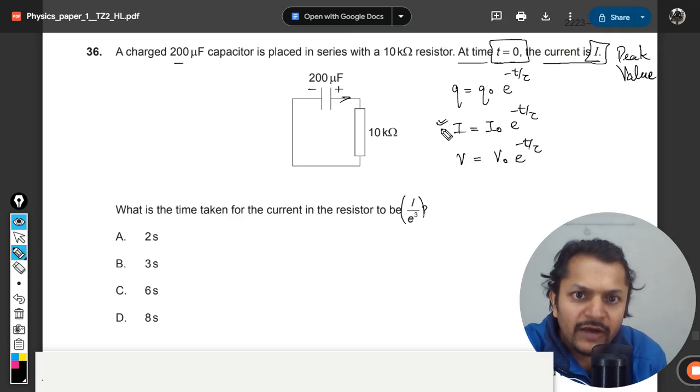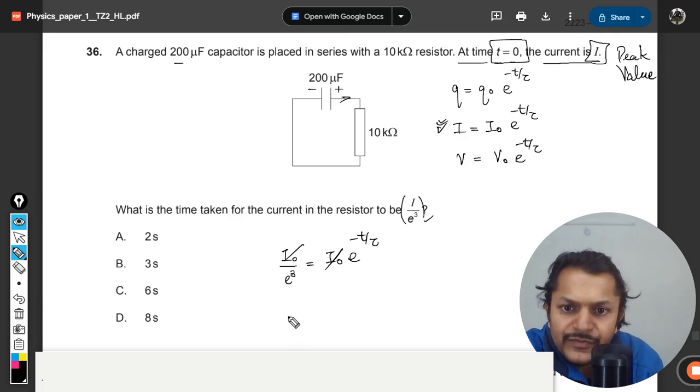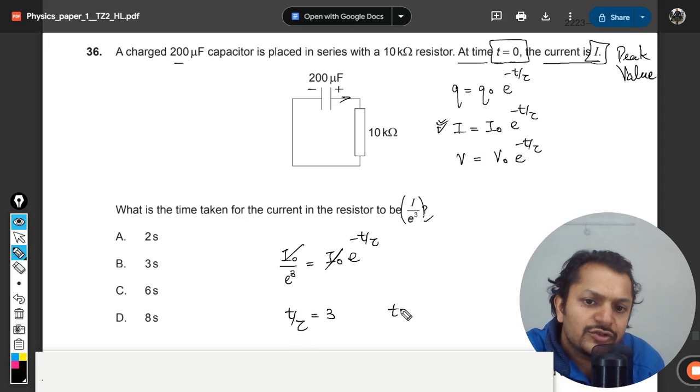Using this equation, let me substitute this value here. It means that the peak value divided by e³ should be the new current. This is i₀e^(-t/τ), and the peak value gets cancelled out. Clearly, t/τ will be equal to 3.